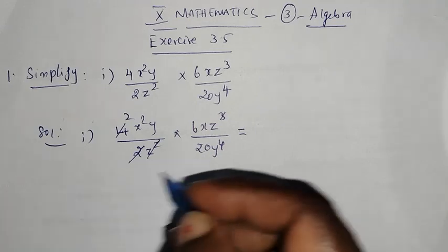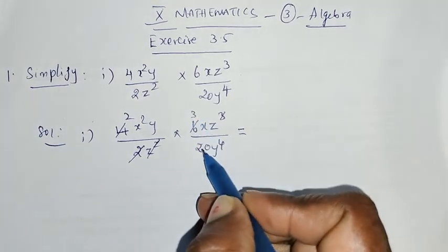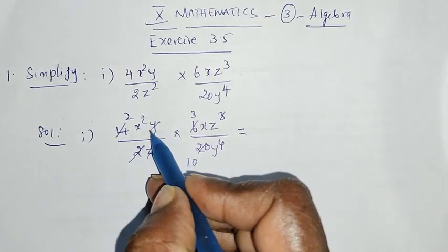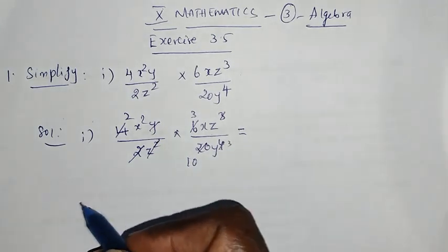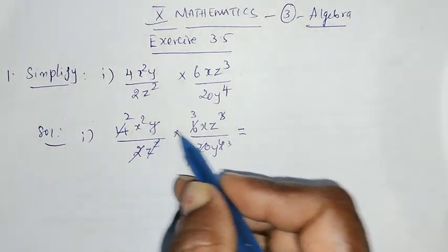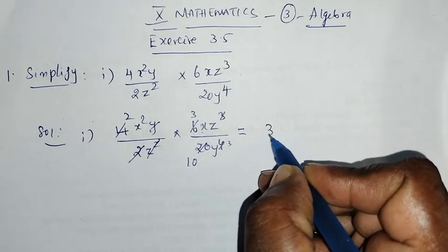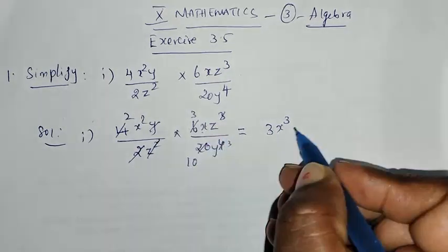Next, 2 tables will be done. 3, 2s are 6, 10, 2s are 20. This is y³. So now, what is this? 3, 3x³ z cube.